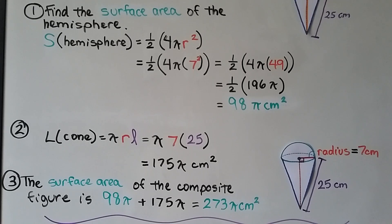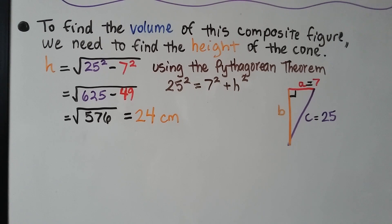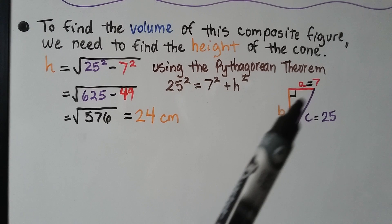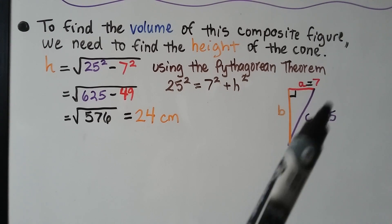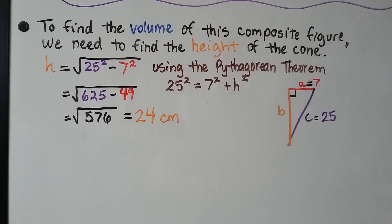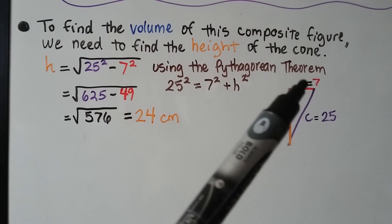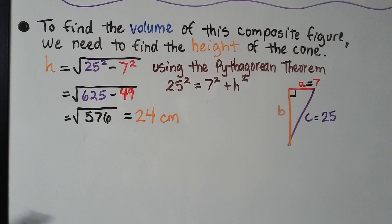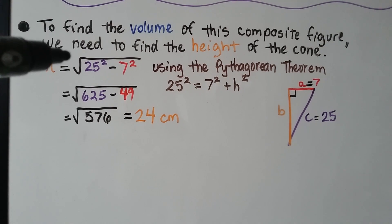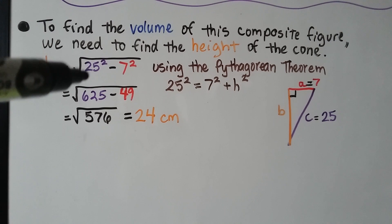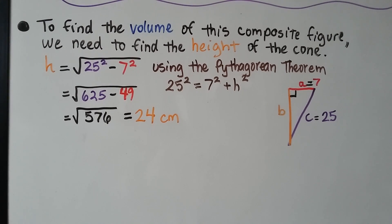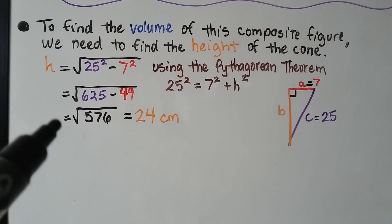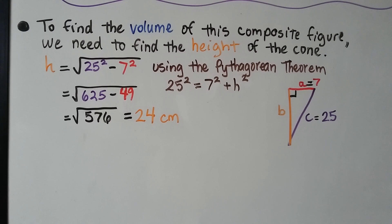We still need to find the volume of the composite figure. To find the height of the cone, we use the Pythagorean theorem with radius 7 and slant height 25: h equals the square root of 25 squared minus 7 squared, which is the square root of 625 minus 49, or the square root of 576, giving us a height of 24 centimeters.